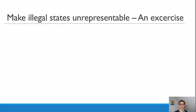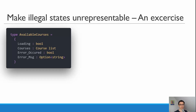Let's have an exercise about how to make illegal states unrepresentable. Think of that we are building a course website for our scuba diving courses. In this example we are going to build a possibility for the user to actually choose and register for courses. We have a type here that actually represents our application state.